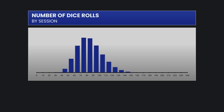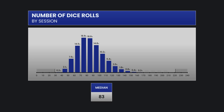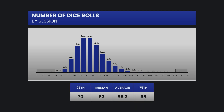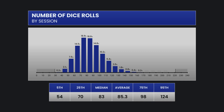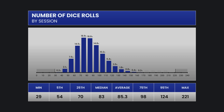Now let's see the distribution of rolls of the dice over a session of 10 shooters. The median is 83 while the average is 85.3. The middle 50% range between 70 and 98 rolls, and the middle 90% range between 54 and 124 rolls. The min and max are 29 to 221 — very long rolls for those sessions.